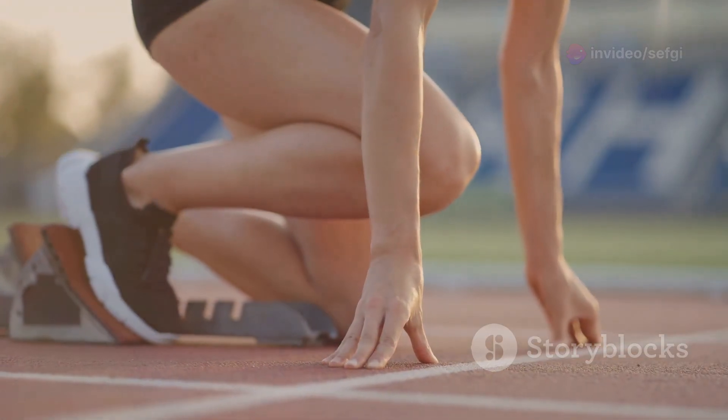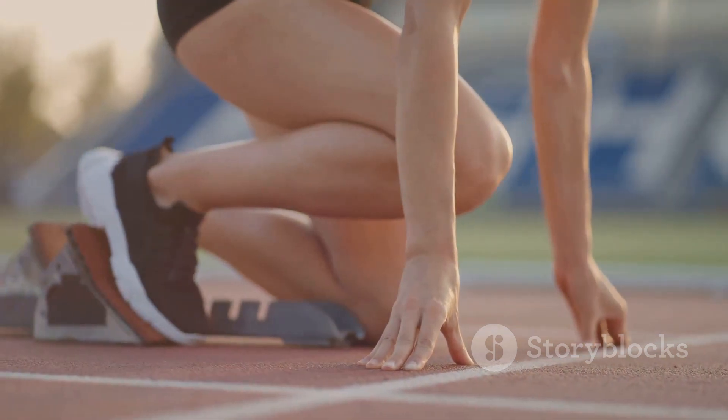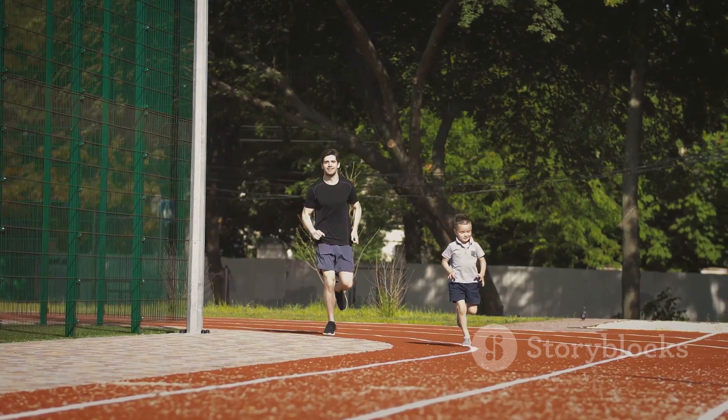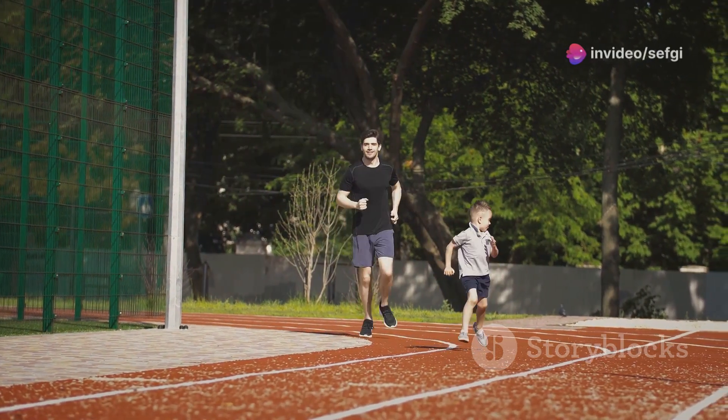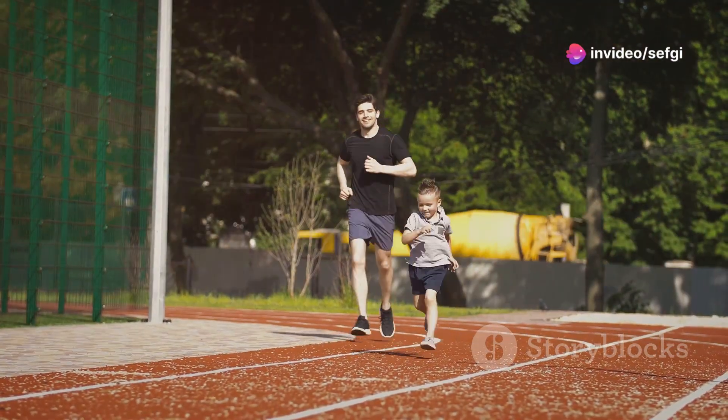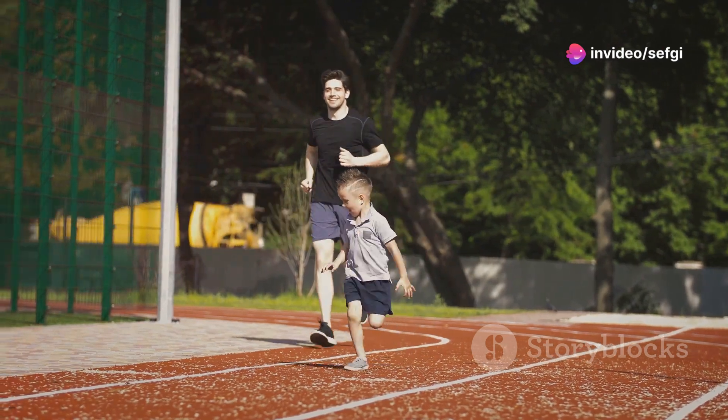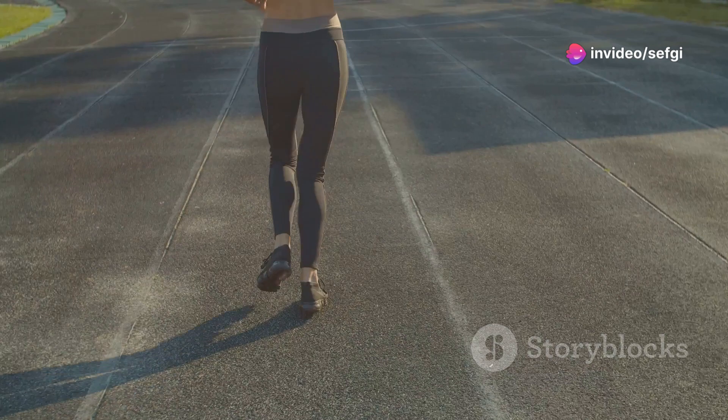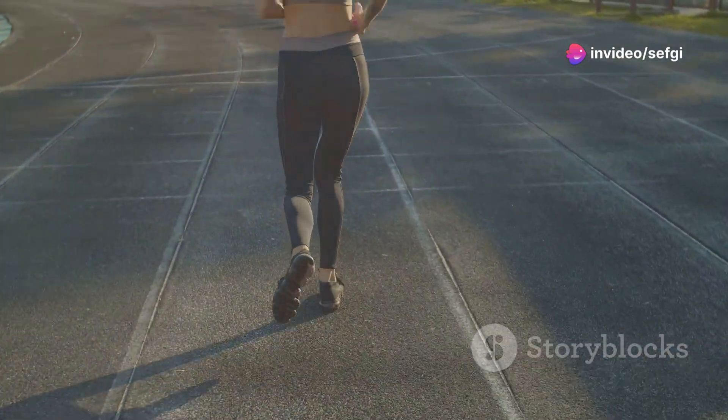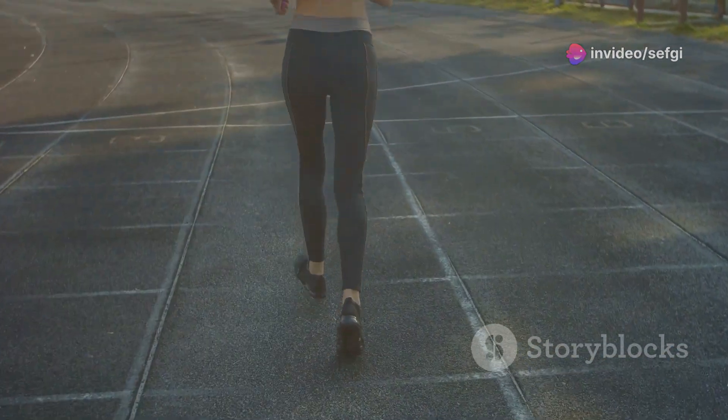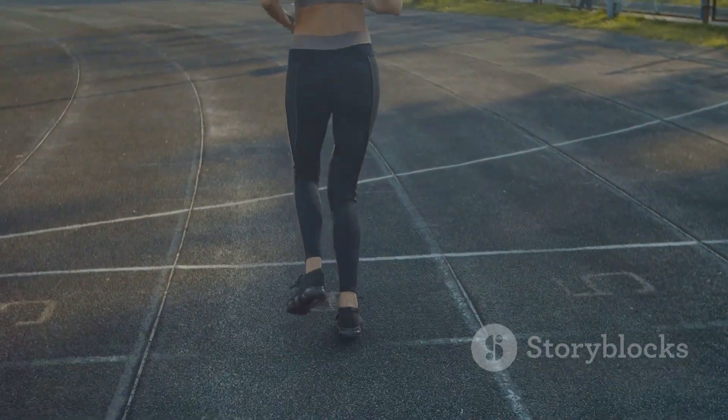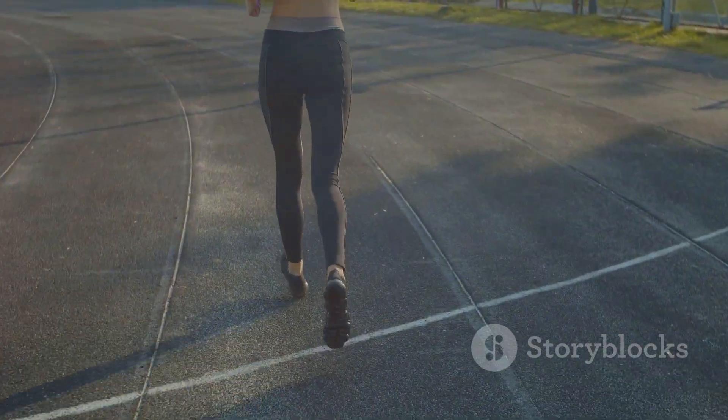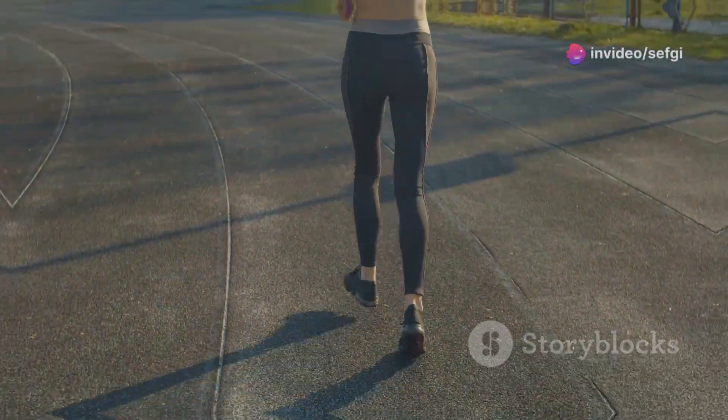One of his most famous paradoxes involves a runner trying to cover a certain distance. To reach the destination, the runner must first cover half the distance, then half of the remaining distance, and so on, infinitely. Zeno argued that since there are infinitely many halves to cover, the runner would never actually reach their goal. This paradox, while seemingly nonsensical in our everyday experience, highlights the disconnect between our intuitive understanding of motion, and the concept of dividing a finite distance into an infinite number of segments.